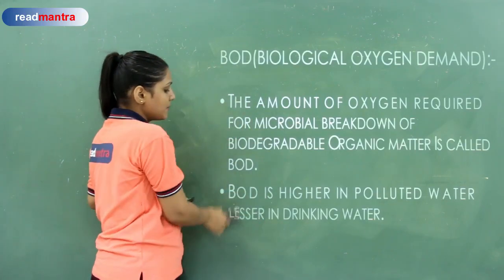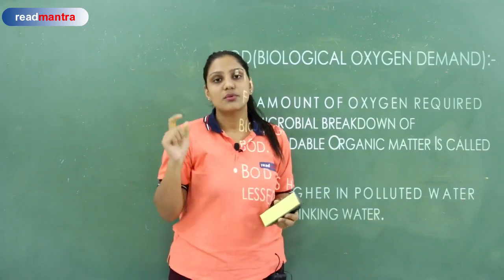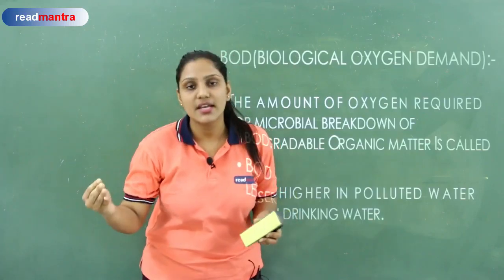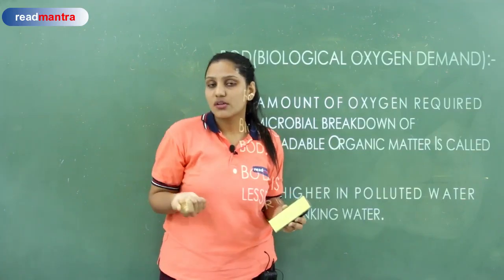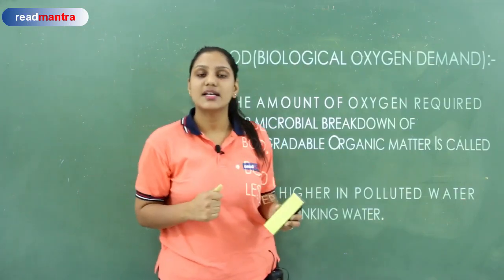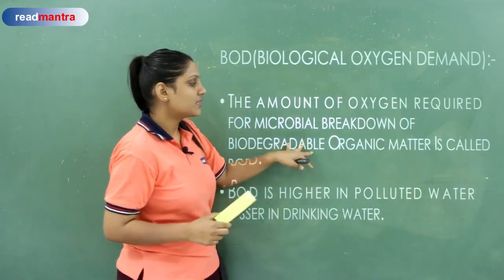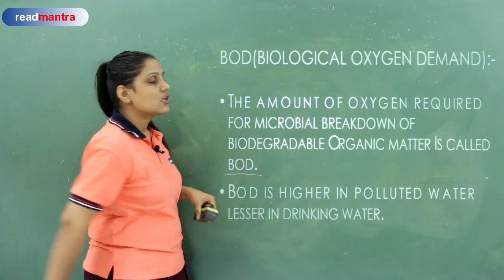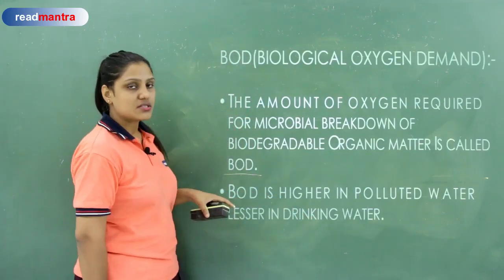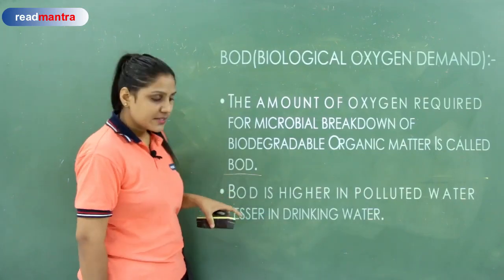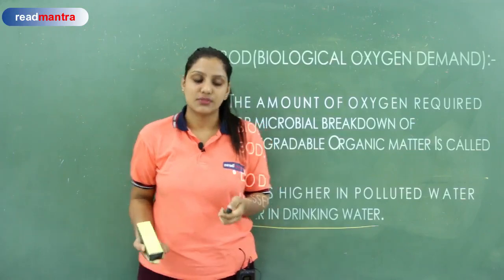BOD (Biochemical Oxygen Demand): when microorganisms use oxygen to break down organic waste in water, as degradation continues, oxygen levels fall and more oxygen is required. The more organic waste, the higher the BOD. Higher the pollution, higher the BOD. The amount of oxygen required for microbial breakdown of biodegradable organic matter is called BOD — also called Biological Oxygen Demand. BOD is higher in polluted water and lesser in drinking water.